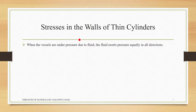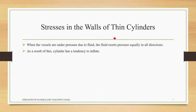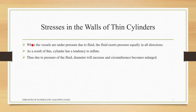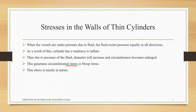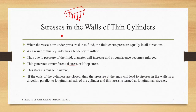When thin cylinders are under pressure, the fluid exerts pressure equally in all directions. As a result, the cylinder has a tendency to inflate — the diameter increases and the circumference gets enlarged. This generates circumferential stress or hoop stress. This stress is tensile in nature, as it pulls the cylinder walls outward.